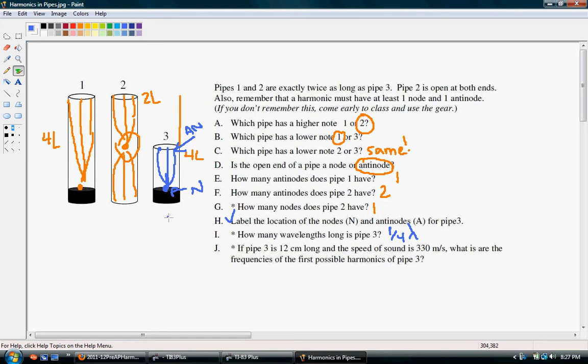Alright, remember that with a closed pipe, you can only have the odd harmonics. Okay, so if it takes four of these lengths to make the first wavelength, then 4 times 12 is going to give us our first wavelength, 48 centimeters. But we don't want centimeters, we want meters. So this is 0.48 meters.